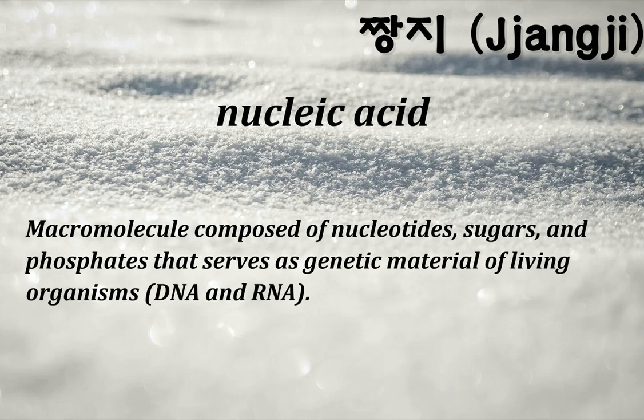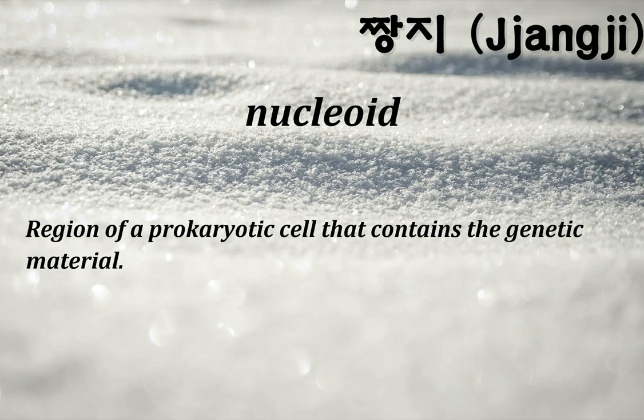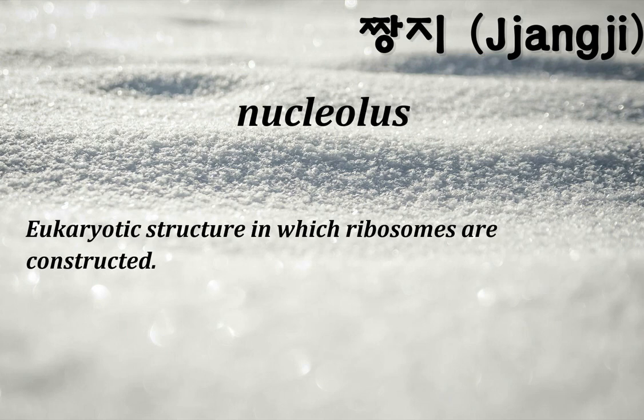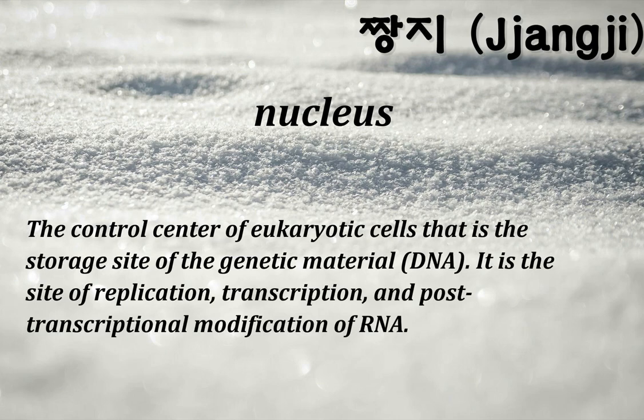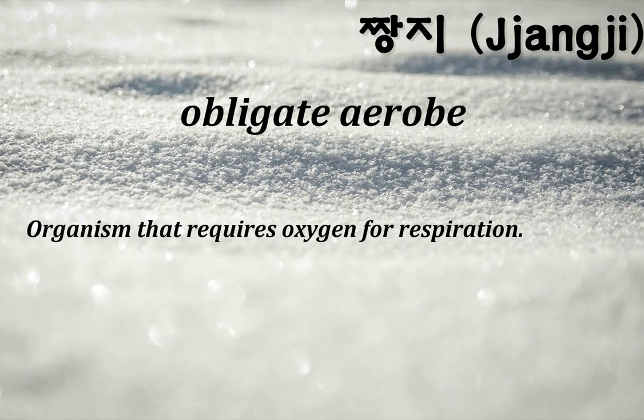Nucleic acid: a macromolecule composed of nucleotides, sugars, and phosphates that serves as the genetic material of living organisms — DNA and RNA. Nucleoid: a region of a prokaryotic cell that contains the genetic material. Nucleolus: a eukaryotic structure in which ribosomes are constructed. Nucleus: the control center of eukaryotic cells that is the storage site of the genetic material (DNA); it is the site of replication, transcription, and post-transcriptional modification of RNA.